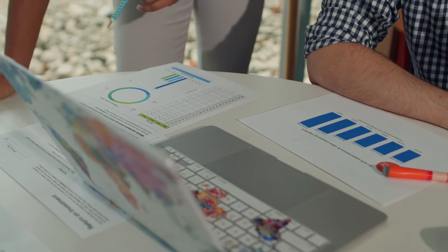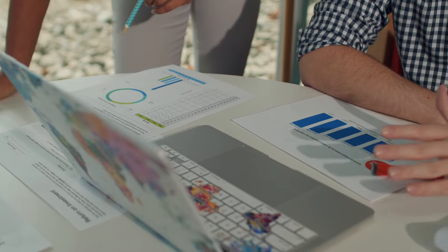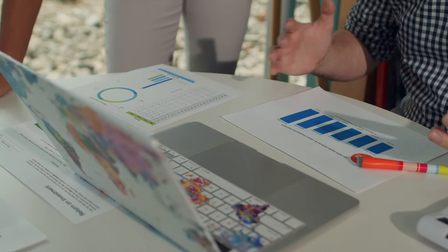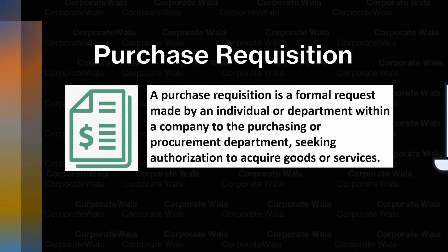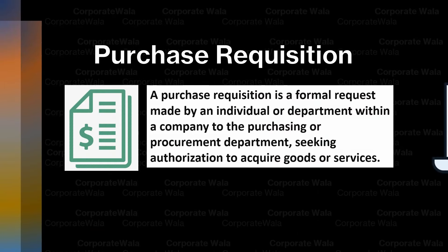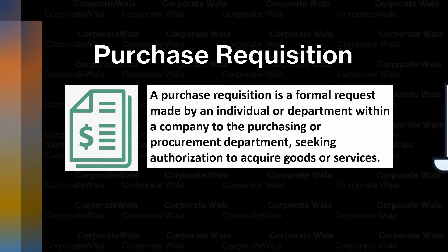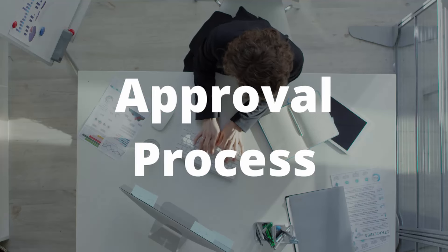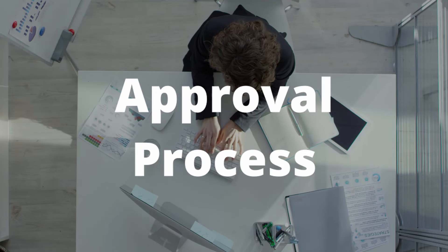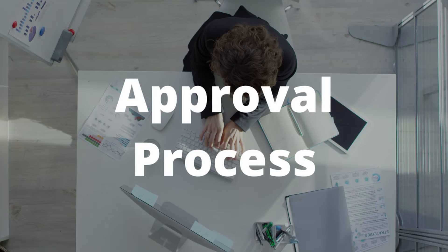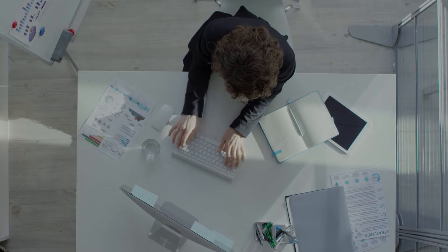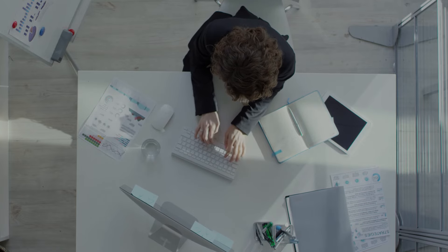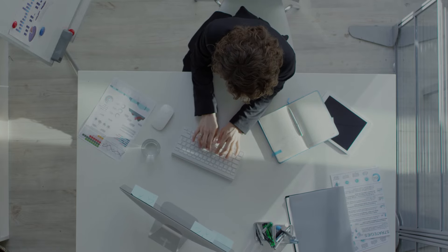The employee creates a purchase requisition, which is a formal request to buy the necessary items. The requisition then goes through an approval process where it is reviewed by the relevant managers to ensure that it is aligned with the company's budget and requirements.